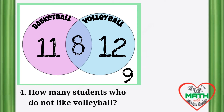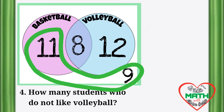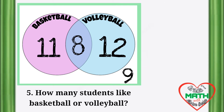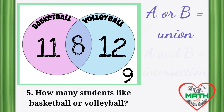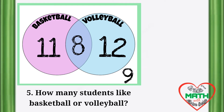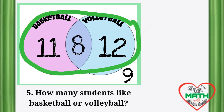Number 4: how many students do not like volleyball? The number of students who do not like volleyball are the numbers outside its circle — there are 20 students who do not like volleyball. Number 5: how many students like basketball or volleyball? Let's not be confused with union and intersection. When we say 'or,' it means we get the union of the sets, and when we say 'and,' it means we get the intersection. There are 31 students who like basketball or volleyball.